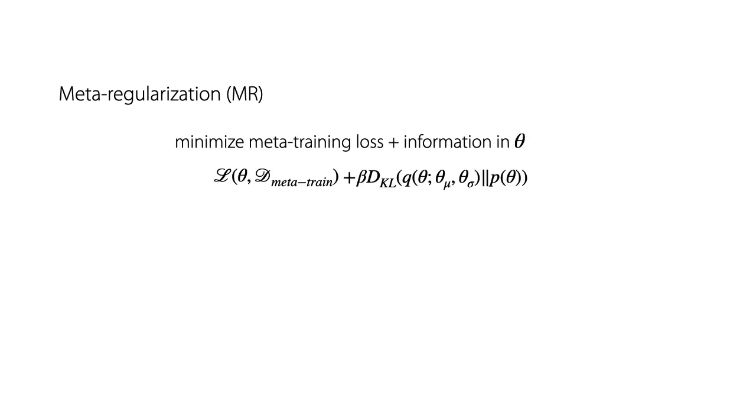We propose meta-regularization. We minimize the standard meta-learning loss with a regularization that controls the information that stored in the parameters that could have been inferred from the data. Here, we only regularize the parameters that don't control the adaptation.